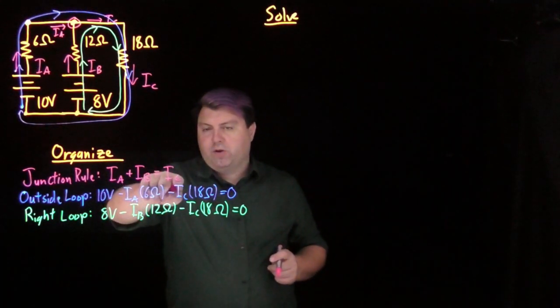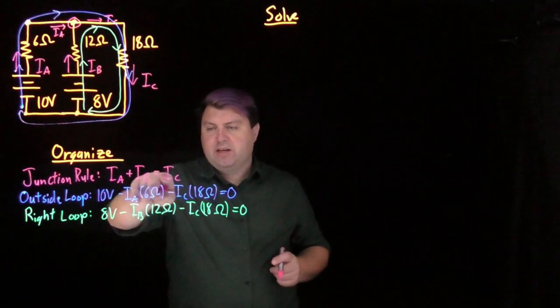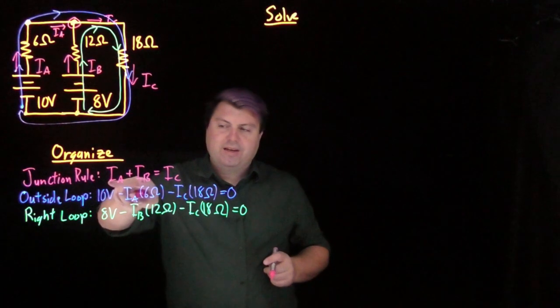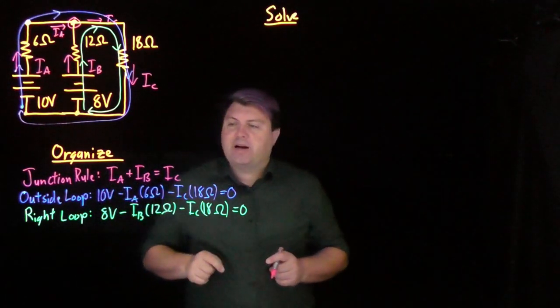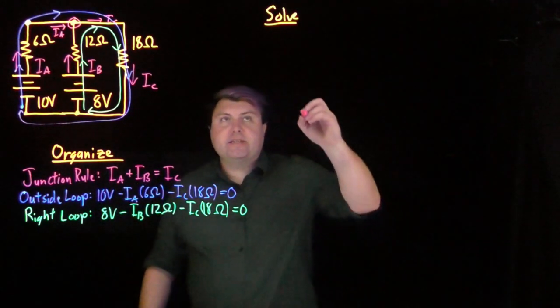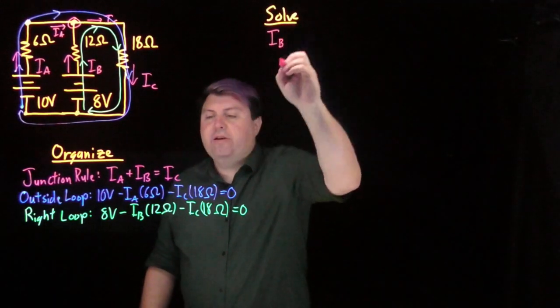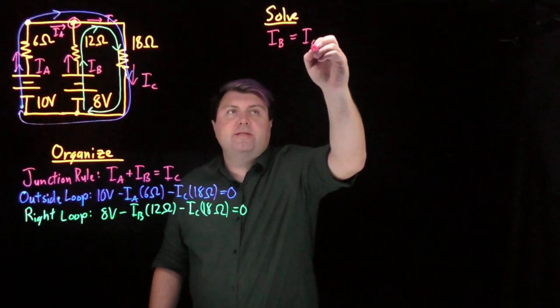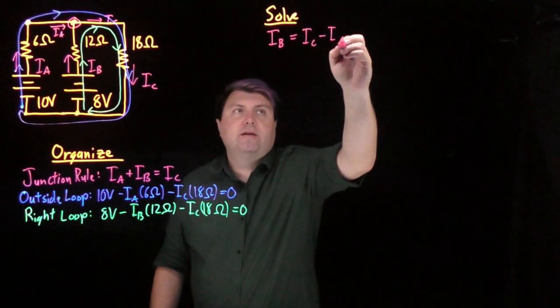For this junction rule, I could immediately substitute Ic, but then I would have this Ia plus Ib for both of them. It's a little bit better to do either Ia or Ib. In this case, I'm going to solve for Ib. So if I'm solving for Ib, I just have to bring Ia over, so it's equal to Ic minus Ia.